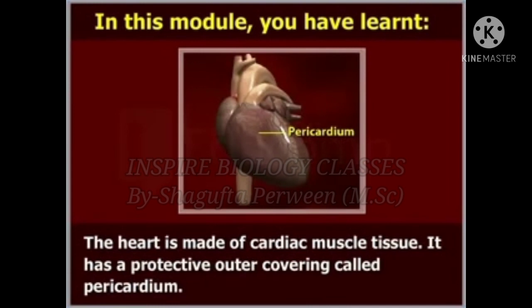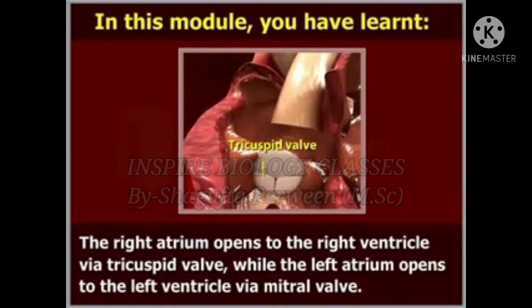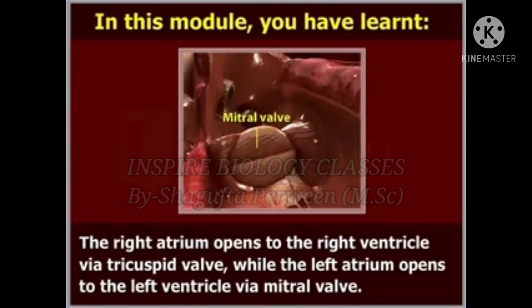The heart is made of cardiac muscle tissue and has a protective outer covering called the pericardium. It has four chambers: two upper chambers called atria and two lower chambers called ventricles. The right atrium opens to the right ventricle via the tricuspid valve, while the left atrium opens to the left ventricle via the mitral valve.